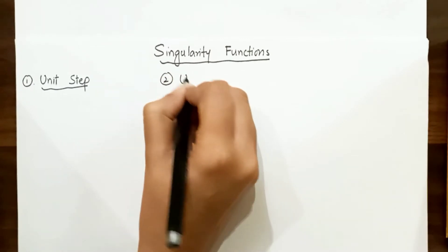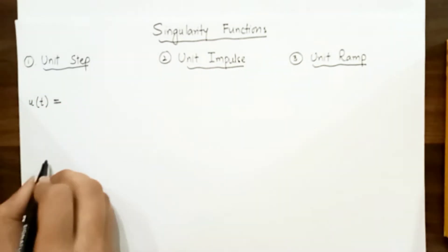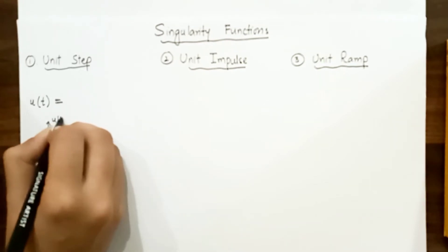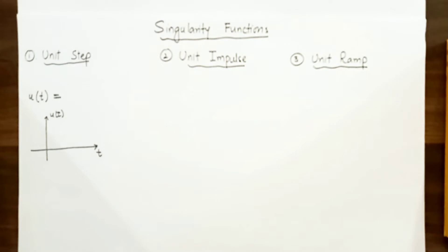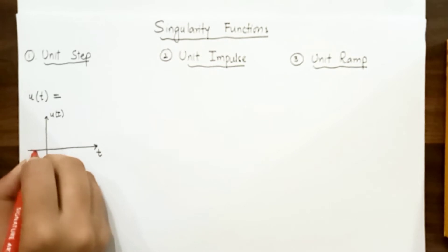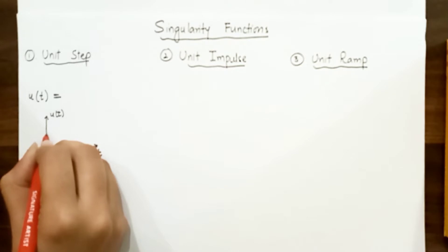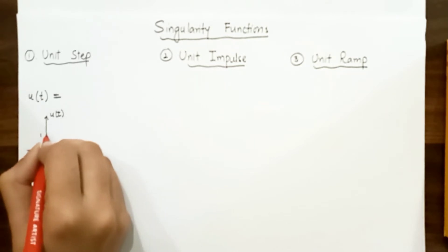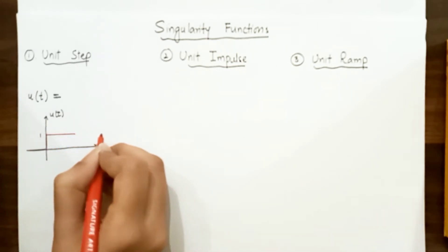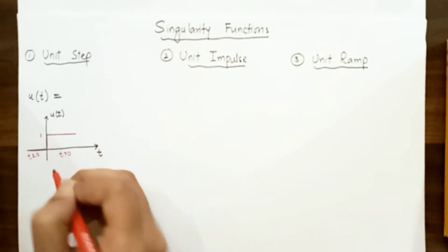We will discuss all three today. Let's start with the unit step function, which is denoted by u(t). Drawing it in the xy plane, with time on the x-axis and the step function u(t) on the y-axis: the unit step function is 0 for t less than 0, and at t equals 0 it attains the value of 1, continuing at 1 for all t greater than 0.